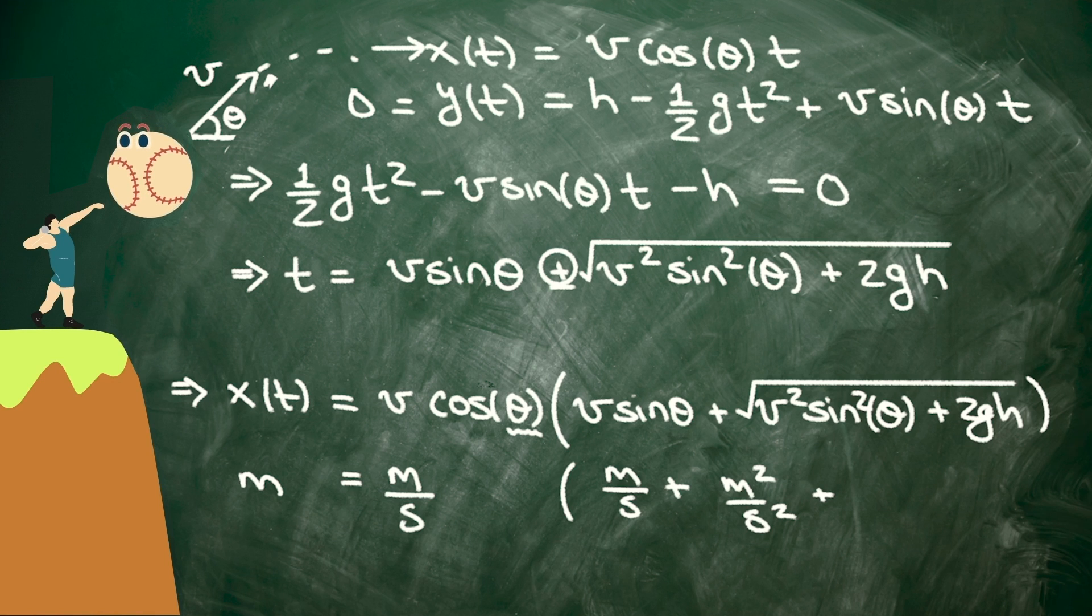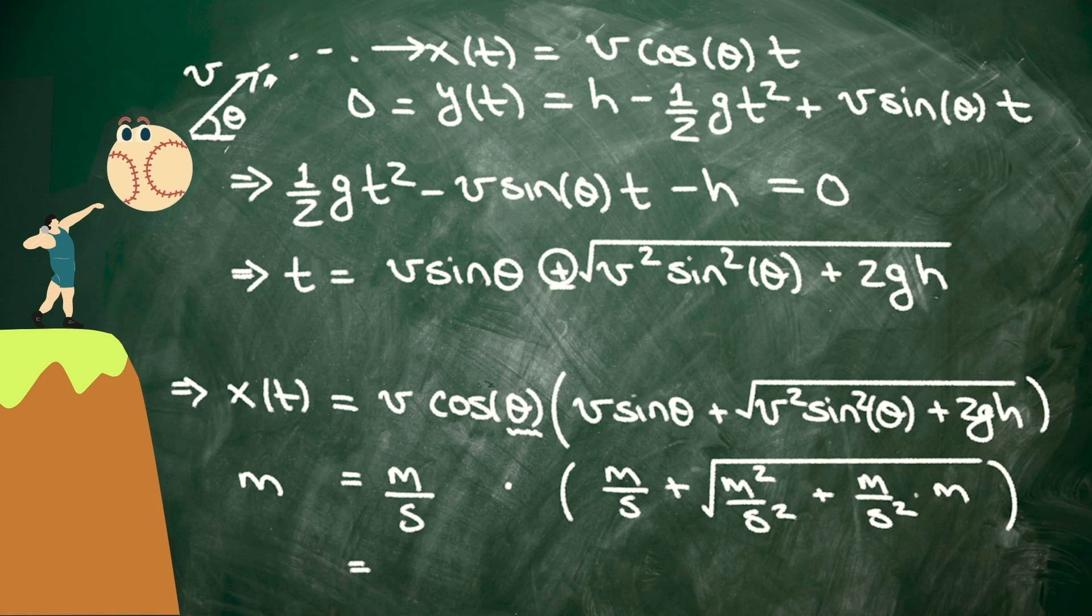The g is an acceleration. That gives us meters per second squared, times h, that's in meters. So we've got meters per second inside the parentheses, times meters per second out front, gives us meters squared per second squared altogether on the right-hand side.